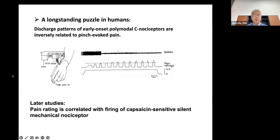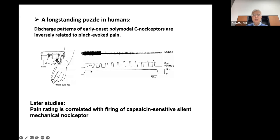This segregation resolves a long-standing puzzle in human research. At a symposium organized by Rohini Kuner around 2016-2017, a talk presented the puzzle that during pinch stimulation, single-unit recordings identified polymodal nociceptors with massive firing during the early phase, yet human subjects did not feel pain at that time. The pain feeling actually correlated with the adaptation of those polymodal nociceptors and later correlated with activation of silent mechanical nociceptors — capsaicin-sensitive neurons that, upon tissue injury, gain mechanical sensitivity immediately.